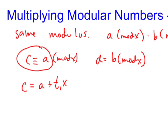And it's because a is the remainder, so if you subtract away the remainder, then you have a multiple of x. And so we do the same thing with d, we get d equals b plus t2 x.